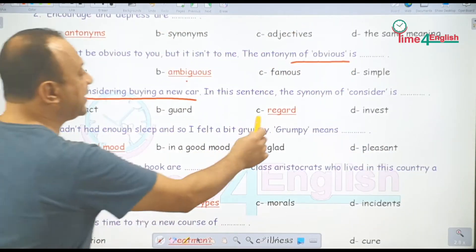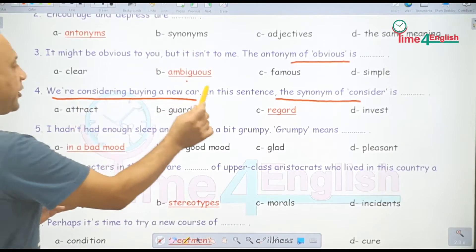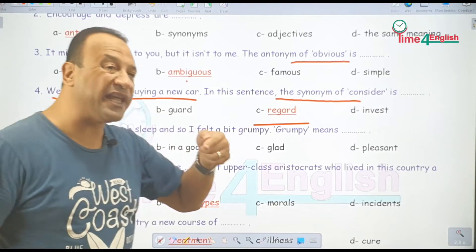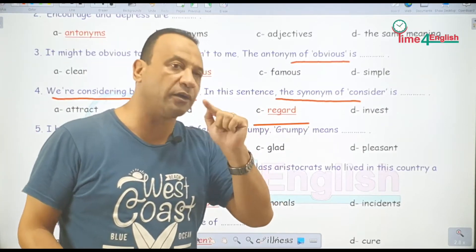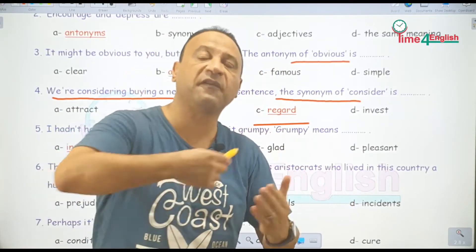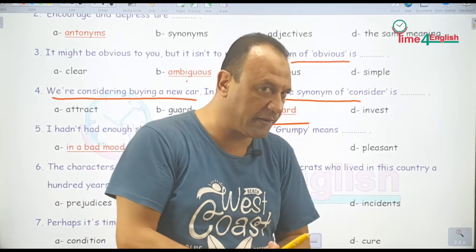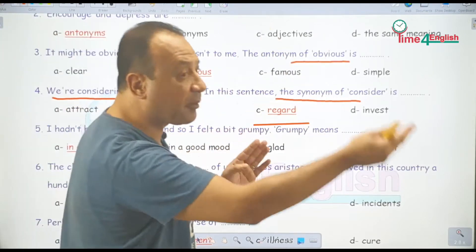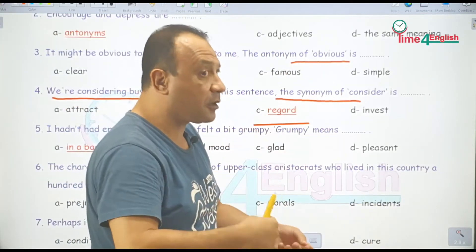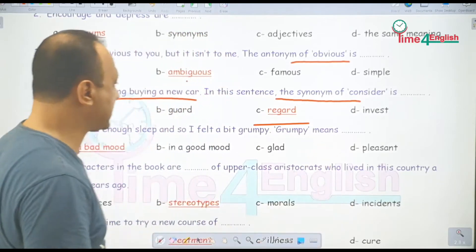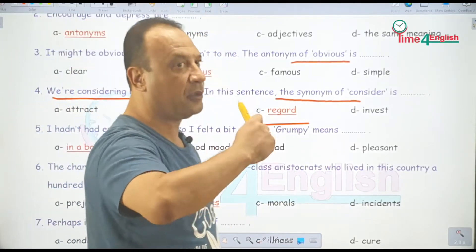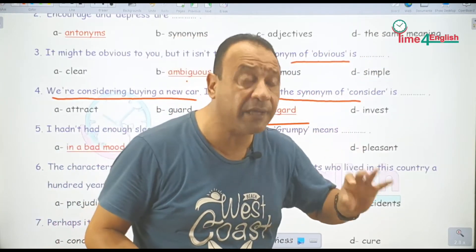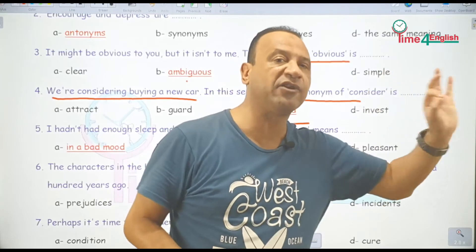Consider doing something أو regard doing something — يعني بفكر أقوم بهذا الأمر. لو واحد بيقول I'm considering traveling abroad أو I'm regarding traveling abroad — لازم يبقى ing فيها. Consider وregard متقاربتان في المعنى هنا — بفكر أعمل شيء معين.